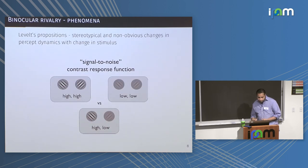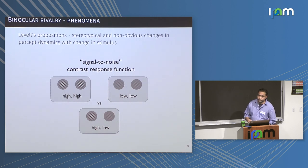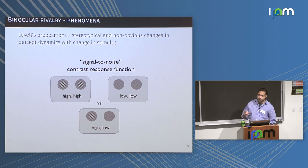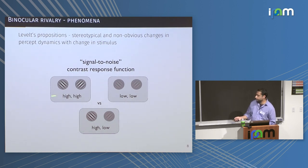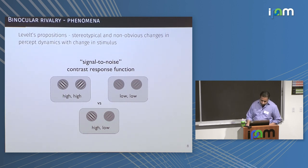For modeling rivalry, what's really important is a set of four propositions that Levelt came up with — describing some very stereotypical response functions. When you change attributes of the stimuli, particularly contrast — going high to low or doing this asymmetrically — you get characteristic behaviors. I can explain why this is important for modeling.